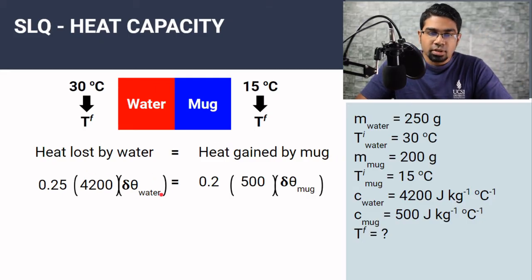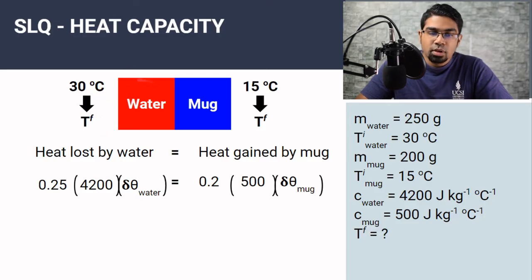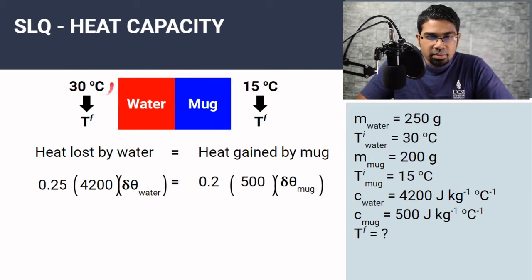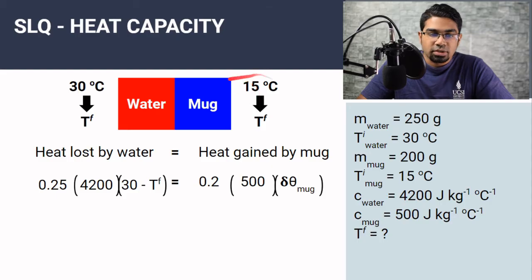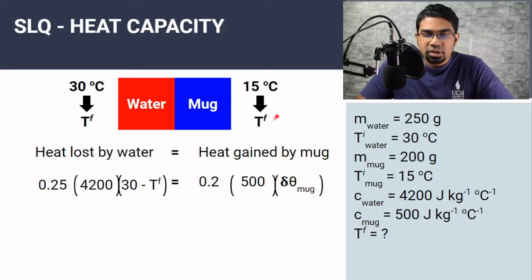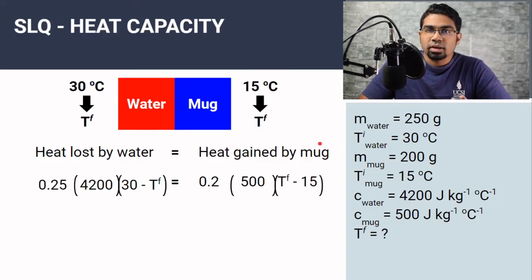The change in temperature of water: since there is a net heat flow from water to the mug, the water temperature is going to drop. 30 degrees is the higher temperature, so the change in temperature will be 30 minus Tf. For the mug, the temperature is going to increase since it was at a lower temperature, so the temperature change is Tf minus 15. Again, we don't take into account any negative sign because of the way we've set up the equation.